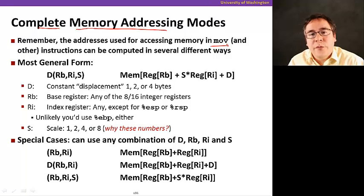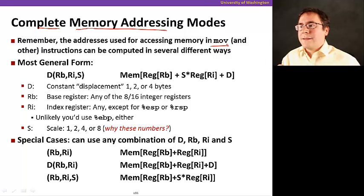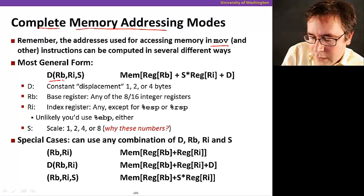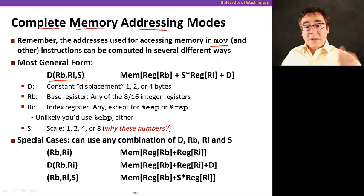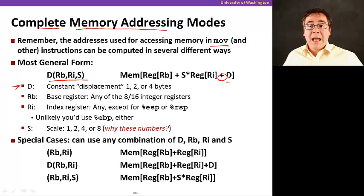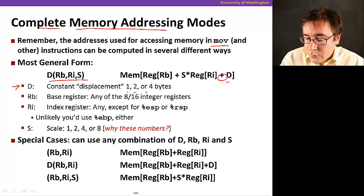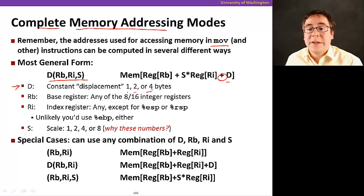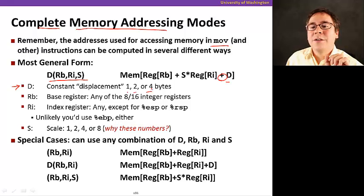So the most general form of addressing mode in x86 is the following form. We have D is a constant displacement, something that's added to the final address. And this is a constant that has to be one, two, or four bytes. That's a constant displacement. That doesn't mean that it can be only off by four bytes. It means that the displacement distance itself has to be a value of one, two, or four bytes.